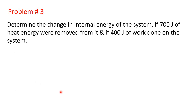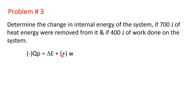Problem number three: Determine the change in internal energy of the system if 700 joules of heat energy were removed from it and if 400 joules of work is done on the system. Heat is removed and work is done on the system. The first law of thermodynamics: Qp equals delta E plus W. Heat is removed, so this sign will be negative, and work done on the system, so W will be positive.